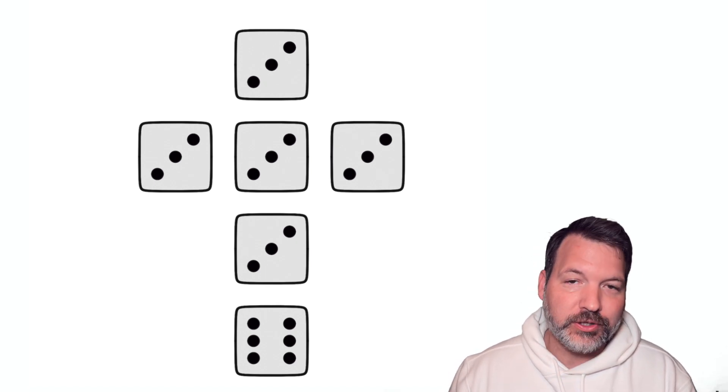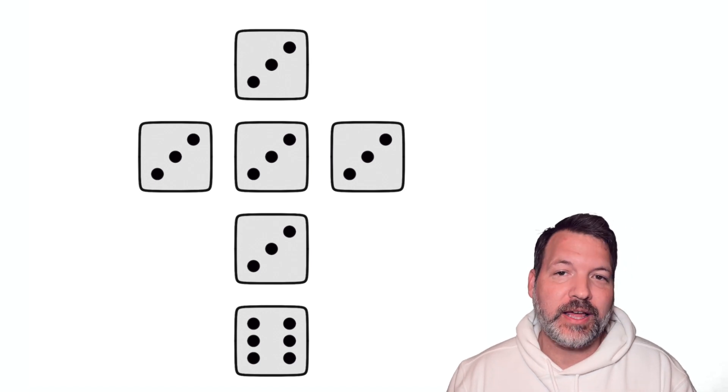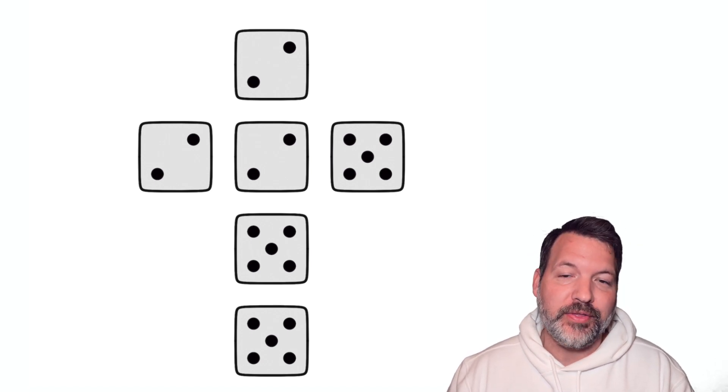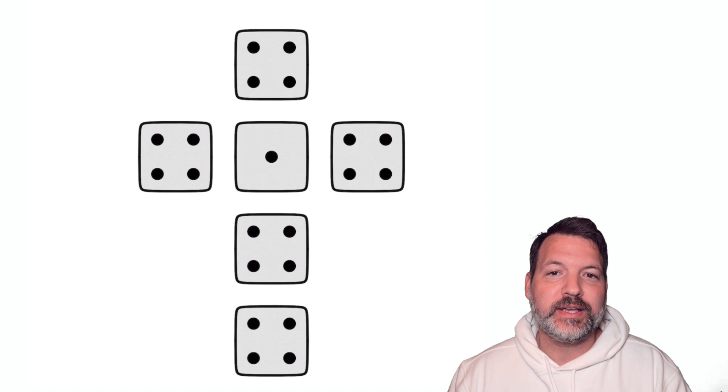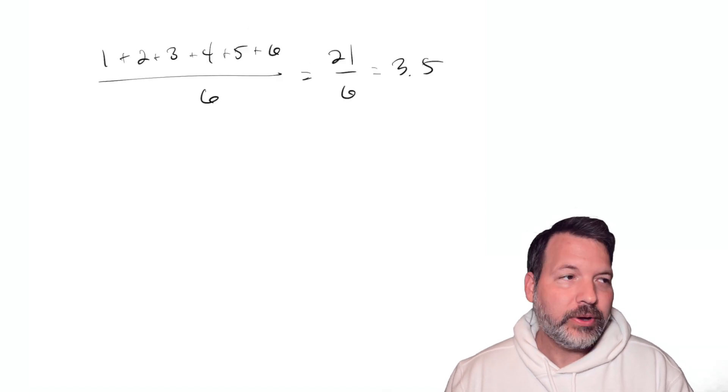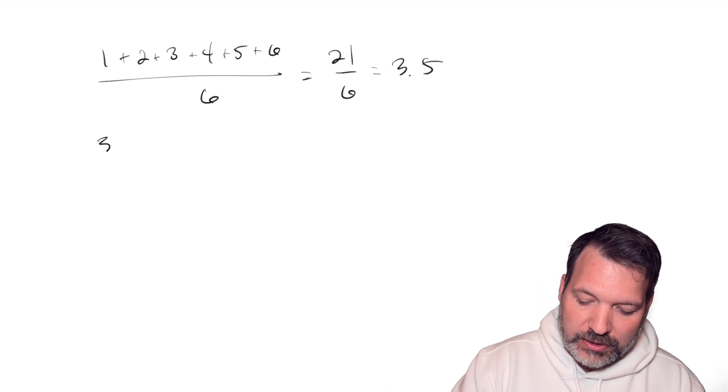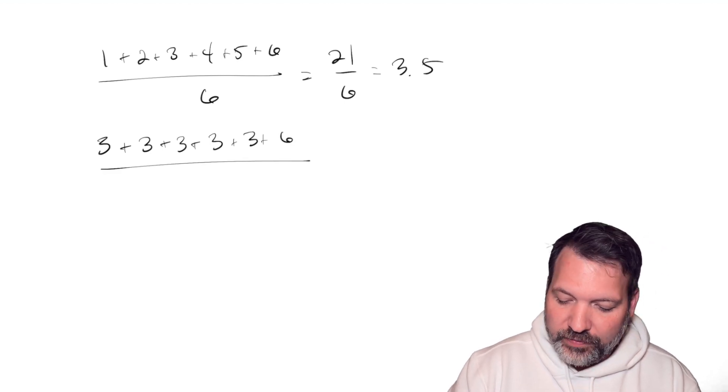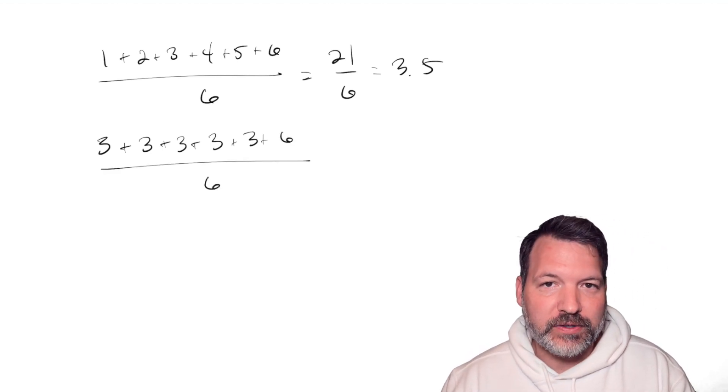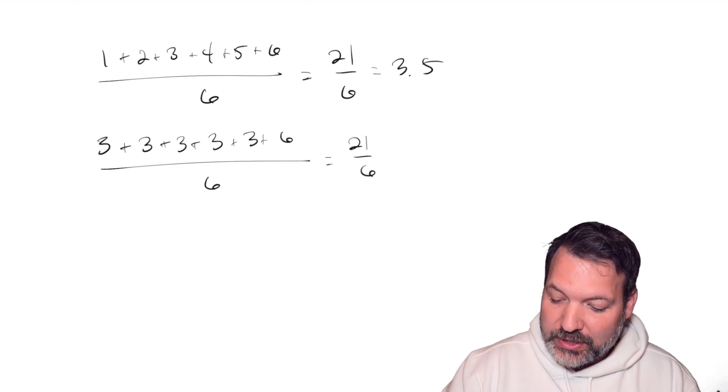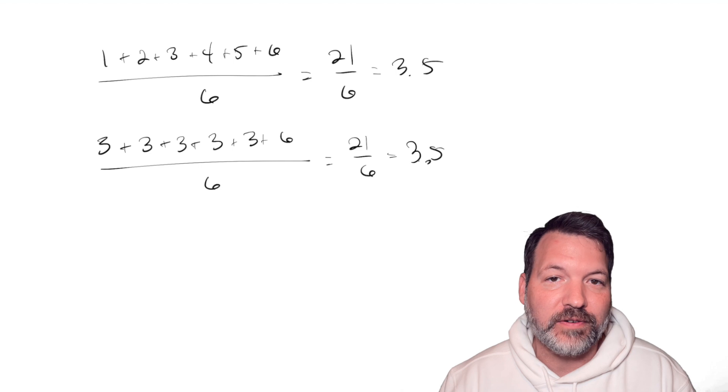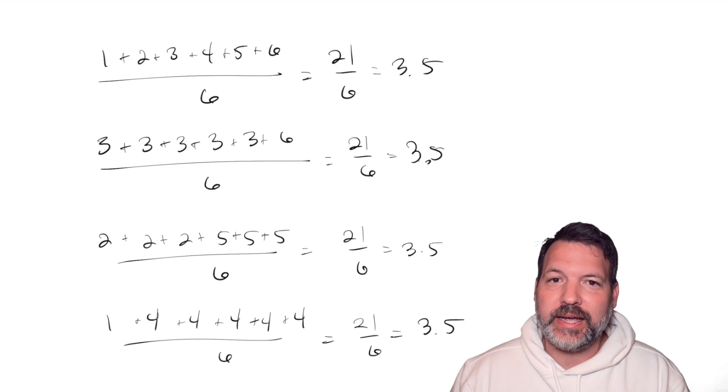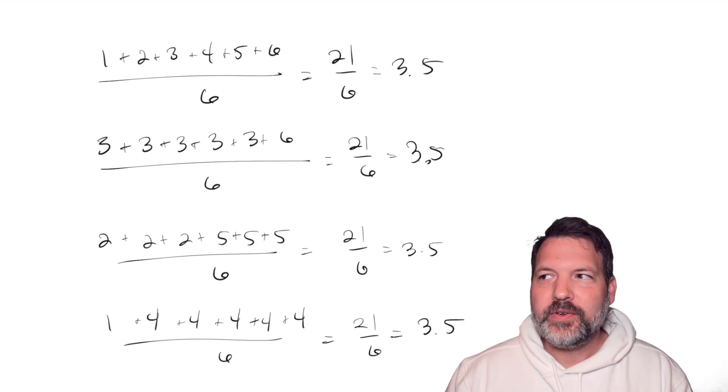These are funny dice. In fact, I'll go ahead and show them to you right now. One of them has five faces that are a 3 and one face that's a 6. One of them has three faces that are 2s and three faces that are 5s, and one of them has one face that's a 1 and five faces that are 4s. If you take any one of those particular arrangements, say we take die A's arrangement of five 3s and a 6, and you add all of that together, five 3s makes 15 plus 6 makes 21, and you can see you end up with the proper expected value for that die. In fact, the same thing is true for die B and die C.